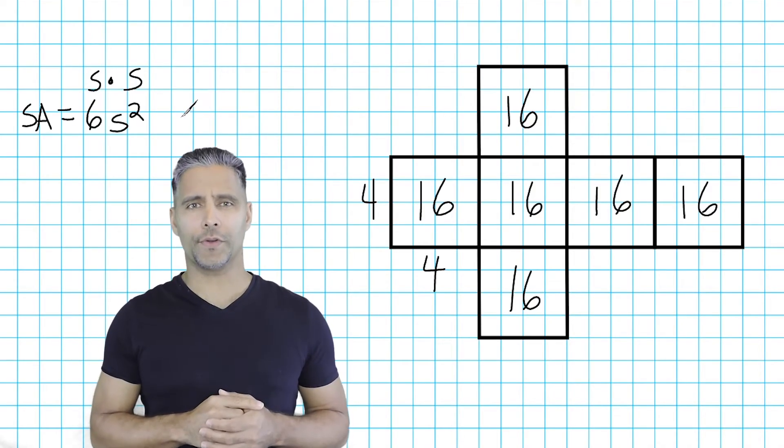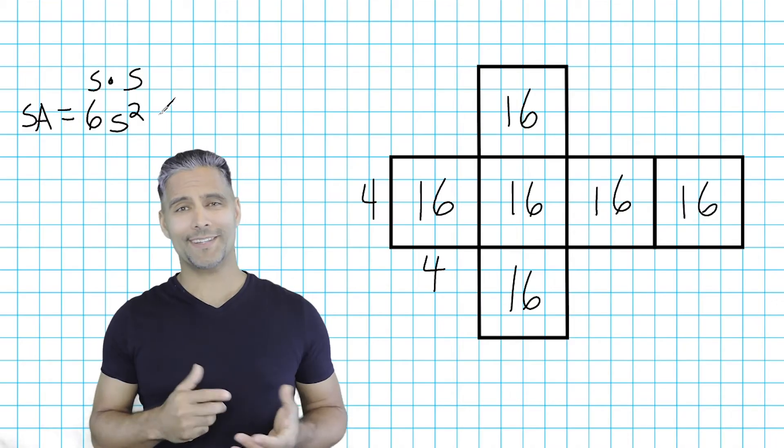So, the formula to find the surface area of any cube may be expressed as 6 multiplied by the side length raised to the second power.